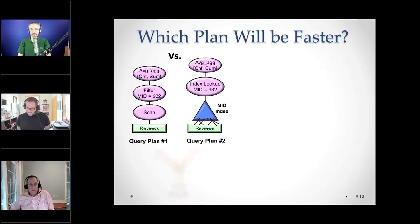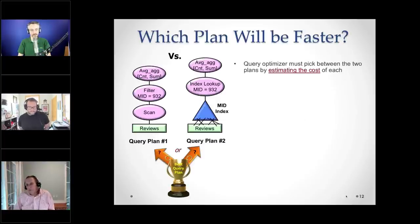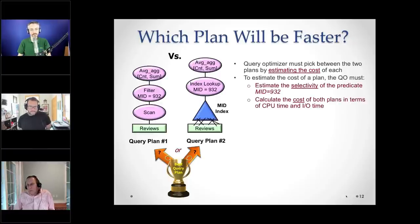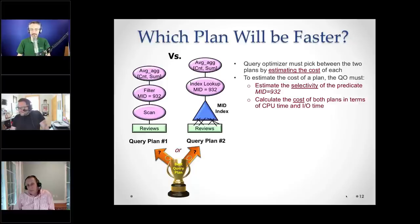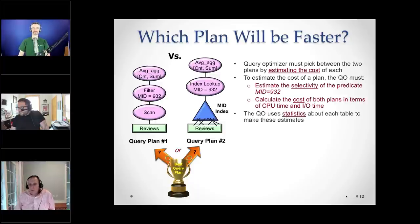So which plan is cheaper? The optimizer must estimate the cost of both plans. First, we need to estimate the selectivity of the predicate 'MID = 932.' Then we need to calculate the cost in terms of CPU time and IO time — which is a bit odd since the optimizer has to add together these two units that are really apples and oranges.